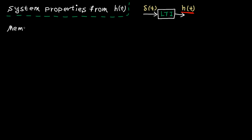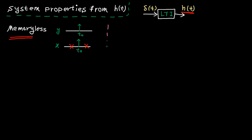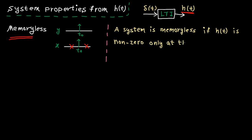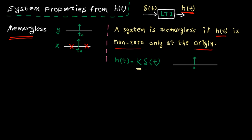Let's start from memoryless systems. A system is called memoryless if the output at any arbitrary time T0 depends only on the input at that time — not the past, not the future. The system does not have memory to store past or future moments. Now, using H(t), a system is memoryless if H(t) is non-zero only at the origin. In fact, H(t) can be expressed as a delta function multiplied by k, which is a constant amplitude.